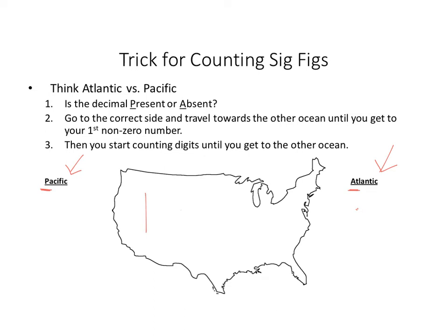For another example, say I have 1.23400. In this number the decimal is present, so I start on the Pacific side. I go to the first number that's not a zero, which is the 1, and I count towards the other ocean: 1, 2, 3, 4, 5, 6. So that number has six significant figures.